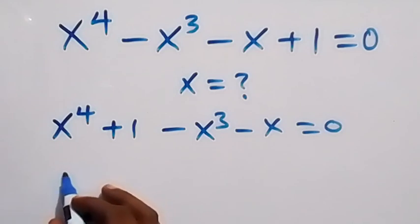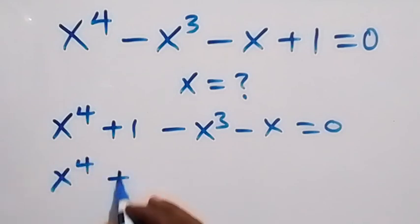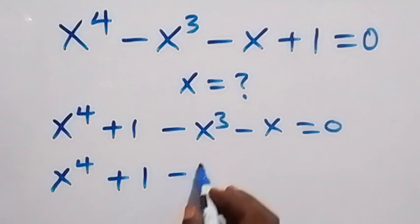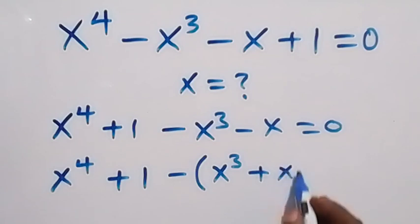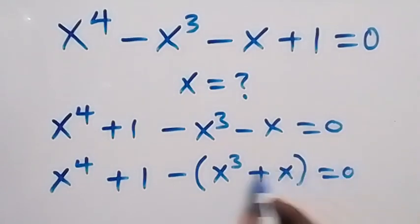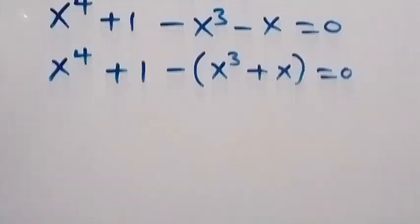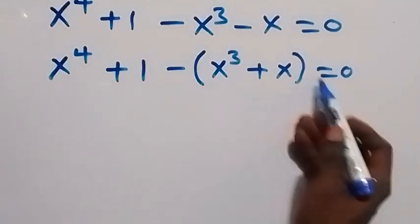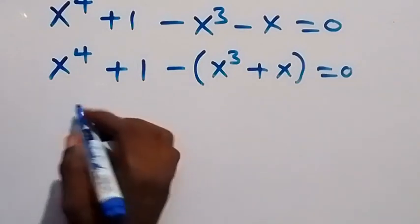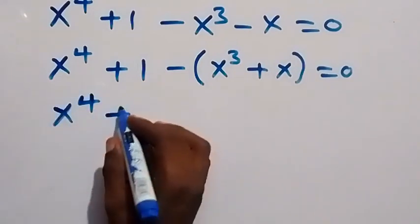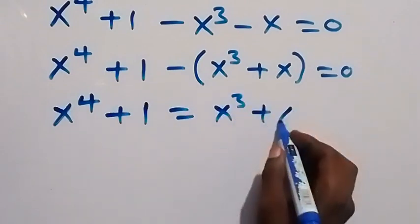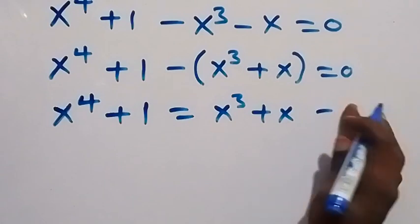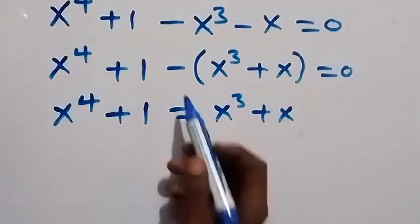We can write this as x raised to power 4 plus 1 minus bracket x raised to power 3 plus x equals to 0. We factor the minus out, and taking minus into the bracket, this becomes plus, so we have x raised to power 4 plus 1 equals to x cubed plus x.